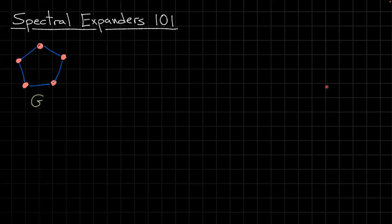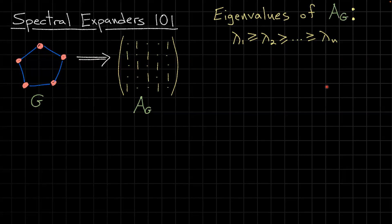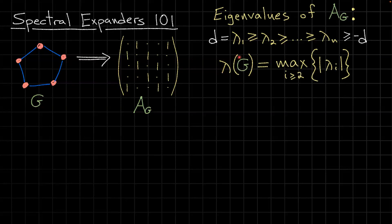Let's set some background about spectral expanders. Given a graph G, it can be represented by its adjacency matrix A. If the graph is undirected, the matrix is symmetric, so it has n real eigenvalues — lambda 1 to lambda n — sorted, where n is the number of vertices. It is known that if the graph is d-regular, lambda 1 equals d, the trivial eigenvalue, and lambda n is greater than or equal to minus d.